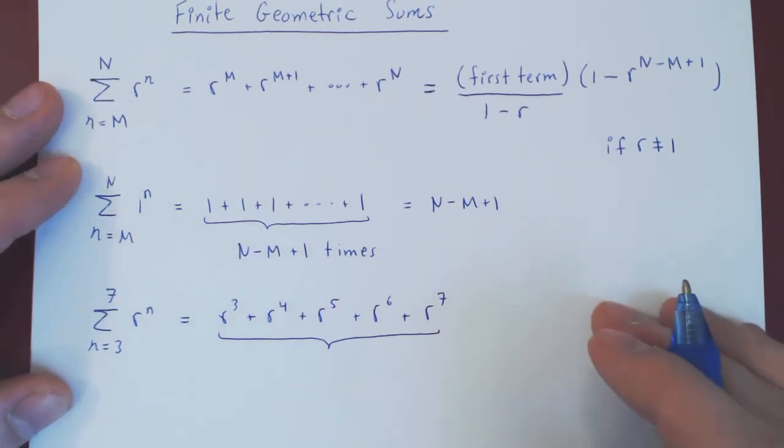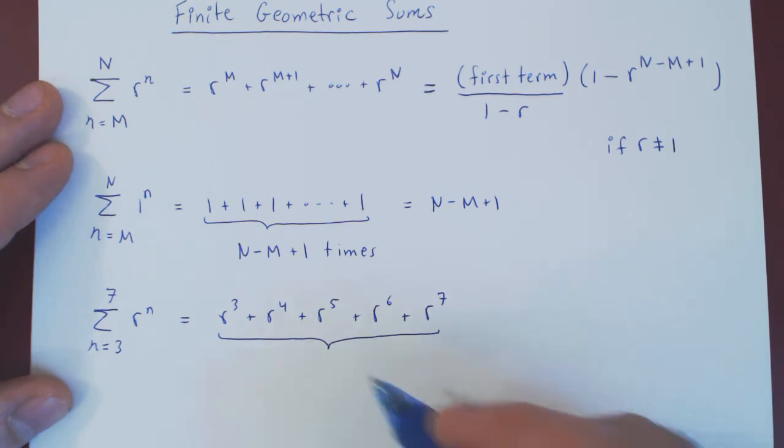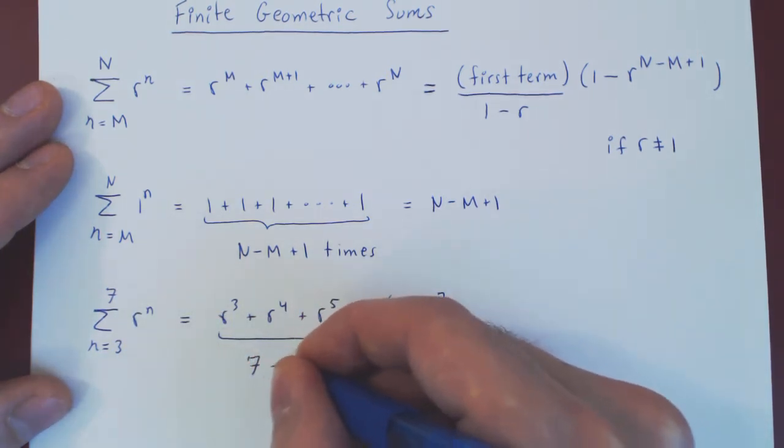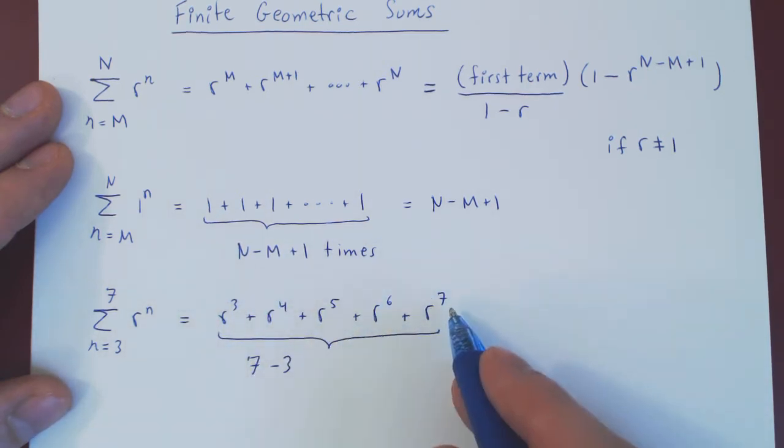So this will be r cubed plus r to the 4 plus r to the 5 plus r to the 6 plus r to the 7. So how many terms are there here? Well, there are clearly 1, 2, 3, 4, 5 terms. But if you do 7 minus 3, that gives you 4 terms, but there are 5 of them.